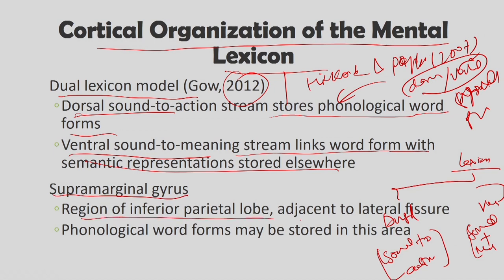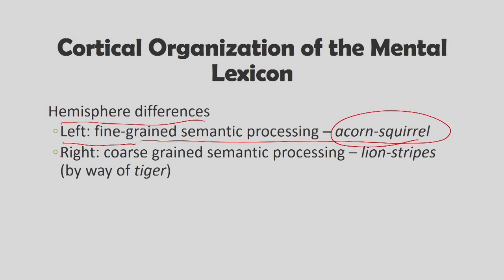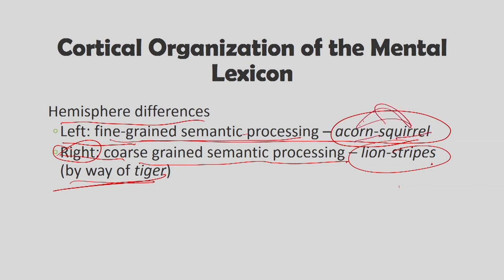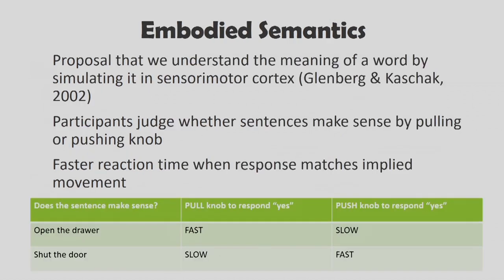There are also hemispheric differences: the left hemisphere handles fine-grained semantic processing — for example, the relationship between 'acorn' and 'squirrel.' The right hemisphere handles coarse-grained semantic processing — for example, the relationship between 'stripes' and 'tiger.' Embodied semantics also plays a role: body movement has a lot to do with the understanding and learning of words, and the kind of movement we make while speaking a word affects how it is coded into the mental lexicon.